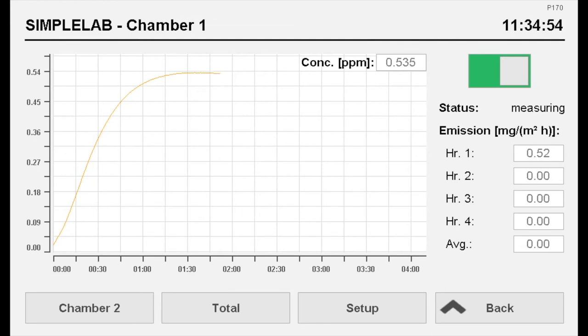After starting the measurement, the formaldehyde concentration initially increases as the sample is heated in the chamber. In the second to third hour, it typically reaches a maximum and then decreases.